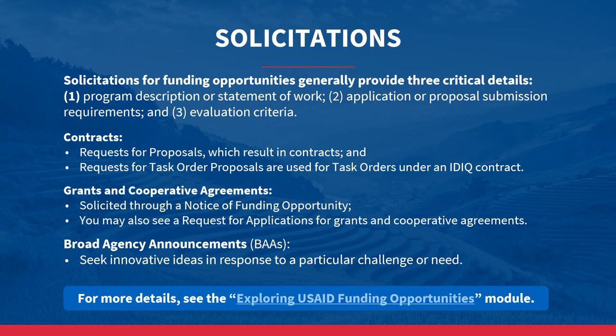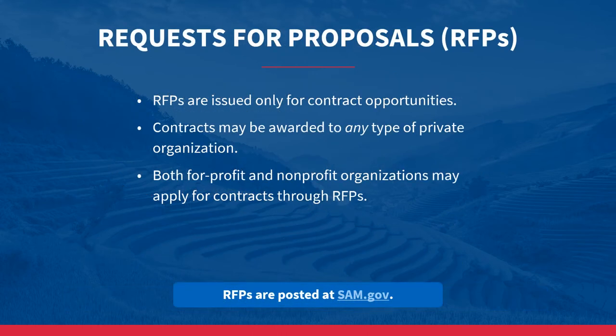Broad Agency Announcements, or BAAs, seek innovative ideas in response to a particular challenge or need and provide an opportunity to work with USAID in a co-creation process to develop ideas with other partners. For more detailed information about types of solicitations and where to find them, visit the Exploring USAID Funding Opportunities training module. RFPs are posted at beta.sam.gov and may be submitted by both for-profit and non-profit organizations.